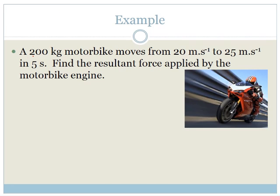Let's do an example. In this example, we're told that we've got a 200 kilogram motorbike that moves from 20 meters per second to 25 meters per second in five seconds. So we've just been shown that F net is equal to the change in momentum over the change in time, which can be rewritten as M times VF minus VI all over delta T.